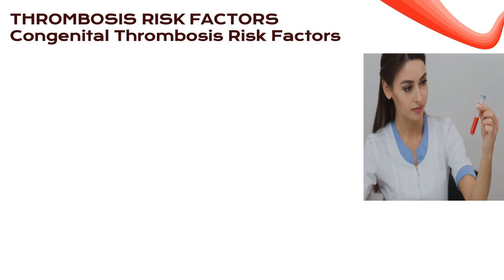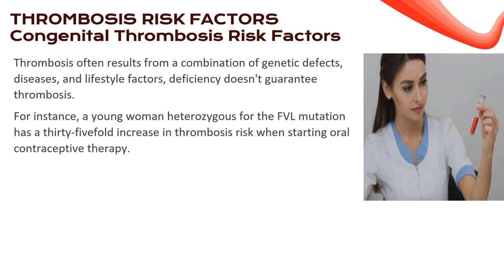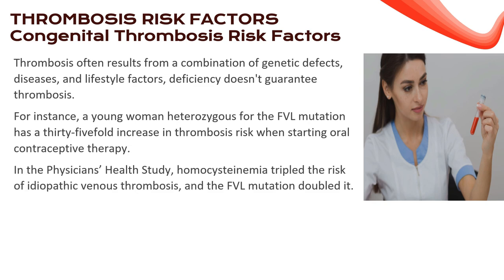Thrombosis often results from a combination of genetic defects, diseases, and lifestyle factors — the double hit. Possessing a single deficiency doesn't guarantee trouble; it's the convergence of multiple risk factors that opens the door to clotting. A young woman with the FVL mutation has a 35-fold increase in thrombosis risk when starting oral contraceptive therapy. In the Physician's Health Study, homocysteinemia and the FVL mutation proved potent, tripling and doubling the risk of idiopathic venous thrombosis, respectively.